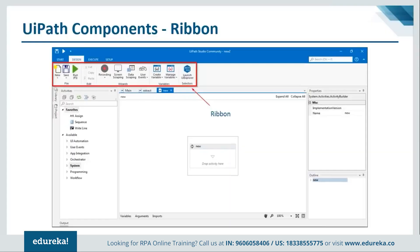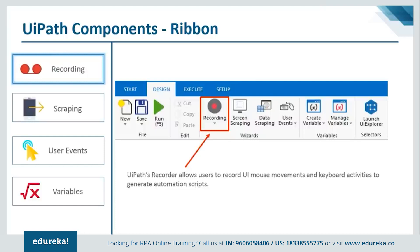Let's discuss the ribbon components. There are four key functions: recording, scraping, user events, and variables. Recording allows you to record your on-screen actions instead of manually dragging and dropping activities one by one. You hit record, perform the steps you want automated, and the computer mimics each action every time you execute the program. Let me jump to the tool and demonstrate — I'll select the desktop recorder and record the calculator.